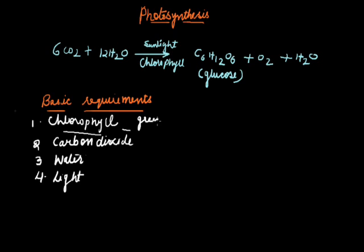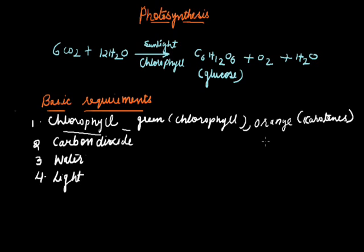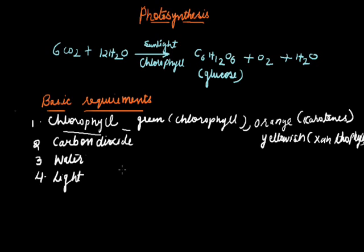The green pigments are the chlorophyll pigments, the orange pigments are the carotenes, and the yellowish pigments are the xanthophylls. Chlorophyll takes part in the conversion of light energy into chemical energy. Other pigments absorb light energy of various wavelengths and hand over the energy to chlorophyll A molecules through resonance.